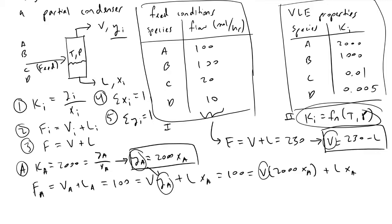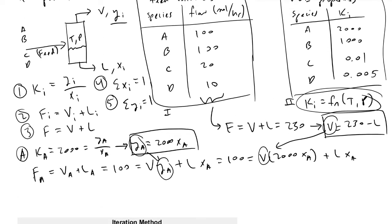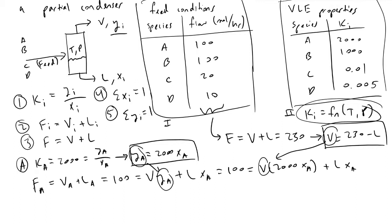I'm going to plug V into this equation, and we're reducing the number of unknowns by using our fundamental equations. Continuing, we have 100 equals (230 - L) times 2.0 x_a plus L times x_a.